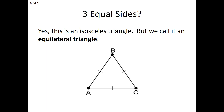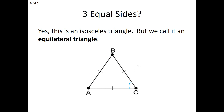What does that mean for the base, the legs, the base angles, and the vertex? It becomes a relative choice. If I choose AB and AC as the legs, then BC is the base, angle B and angle C are the base angles, and angle A is the vertex angle. But I could choose a different pair of equal sides as the legs, which would shift the labels accordingly. An equilateral triangle is in fact isosceles, and we will see a theorem on the worksheet involving an equilateral triangle.